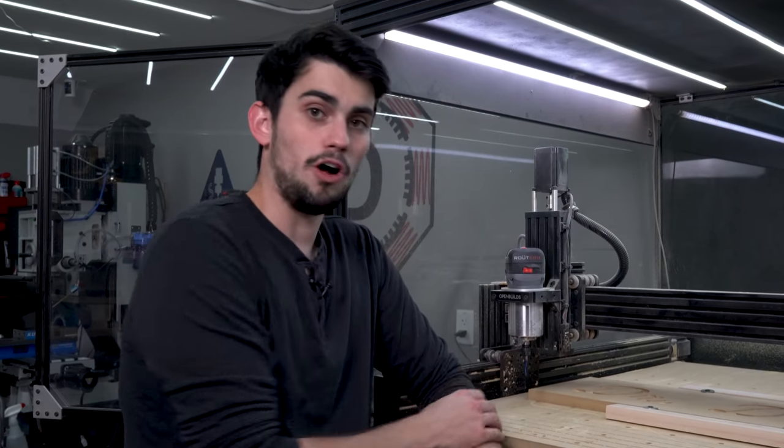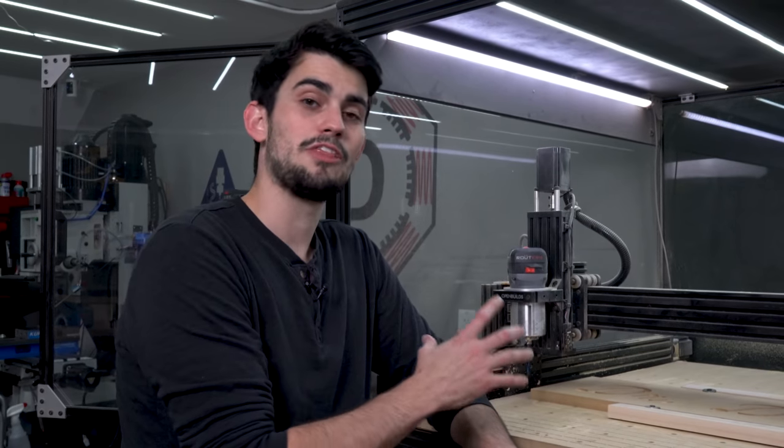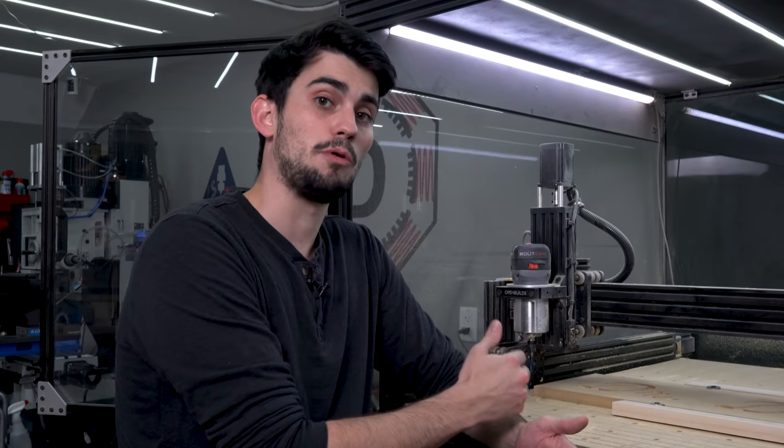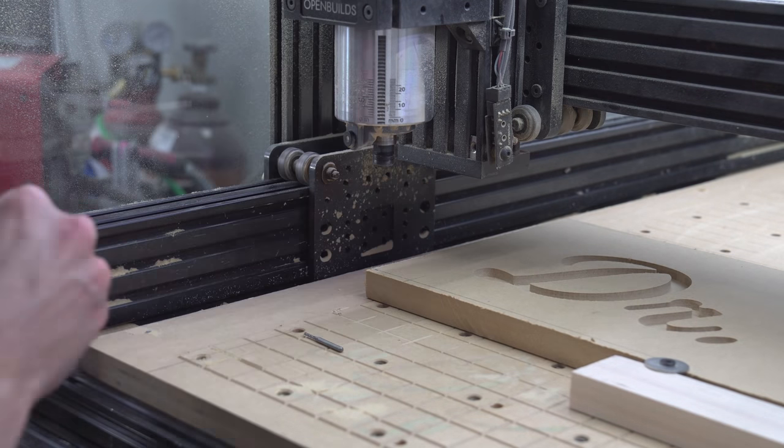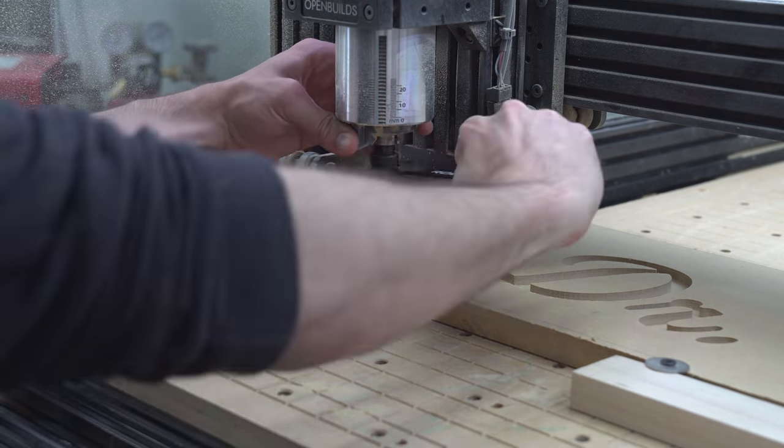You'd be surprised by how much force is required to loosen these collets. On my old CNC router, which was belt driven, whenever I would try and switch out tools, the whole gantry would move. This would cause me to lose that original origin point and my subsequent cuts would be slightly shifted. Not good for rest machining. That is not a problem whatsoever with this machine for two reasons. The first is that the lead screw is super stiff and I have the high torque NEMA stepper motor upgrade on each axis. For those reasons, this thing stays put and I can easily switch out tools with the peace of mind knowing that they'll be in the exact same spot when I get done with the change.